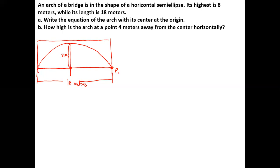The two endpoints are vertex 1 and vertex 2, since the major axis is horizontal. The length of the major axis is 18 divided by 2, giving us 9 meters on each side. Thus the coordinate of vertex 1 is (9, 0) and vertex 2 is (-9, 0).